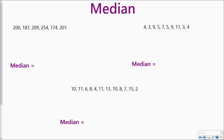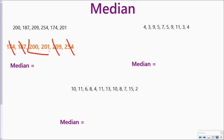Let's take a look at these data sets. I need to put it in order, so I have my list here. I can cross off and work my way towards the middle. In this case, I have two numbers and my median is going to fall right in between them. Between 200 and 201, I have 200.5.